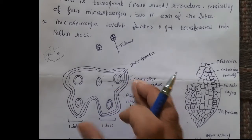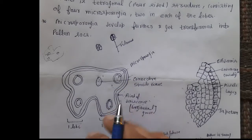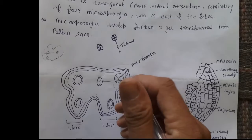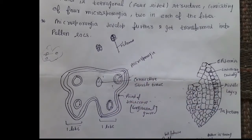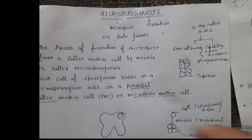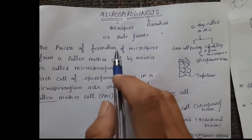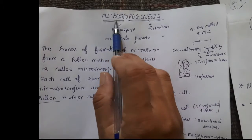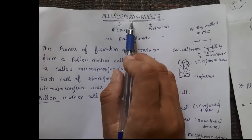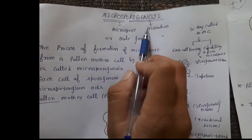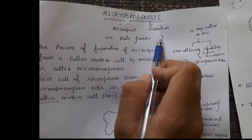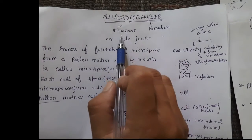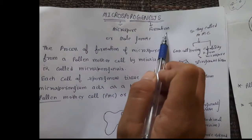Today we study microsporogenesis. What is microsporogenesis? Let's discuss. The word 'micro' refers to microspore, and 'genesis' means formation. So microsporogenesis means the formation of microspores.